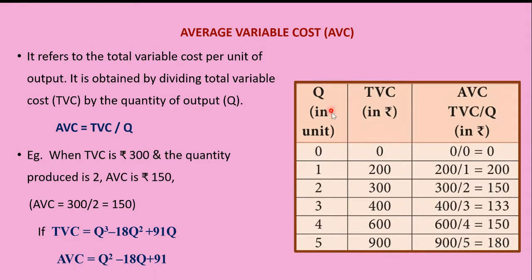Looking at the table: quantity is 0, 1, 2, 3, 4, 5. TVC increases as output increases — variable cost keeps changing. For one unit TVC is 200, for two it is 300, for three it is 400, for four it is 600, and for five it is 900. AVC = TVC / Q: 200/1 = 200, 300/2 = 150, 400/3 = 133, 600/4 = 150, and 900/5 = 180.